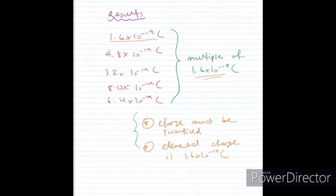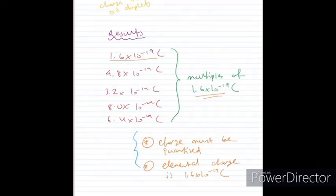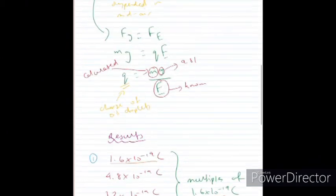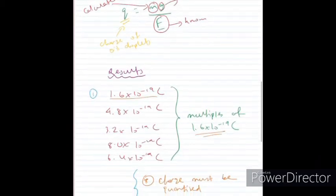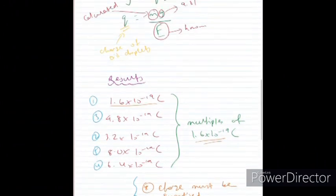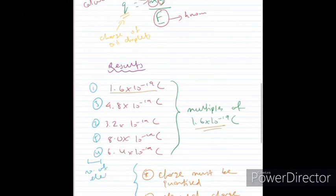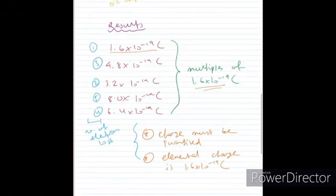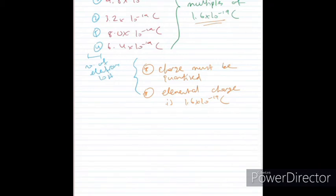And we can use these two conclusions to explain our results over here. In our first case, what must have happened was, 1 electron must have been knocked off the oil droplet over here. In our second case, 3 electrons must have been knocked off the droplet, then 2, 5, 4, and so on. So, this represents the number of electrons lost by the droplets, which is causing this positive charge over here. It's causing this positive charge because electrons are negatively charged, and if we lose a negative charge, then the net charge becomes positive. And as a result of this, he concludes that the charge of an electron must be equal to negative 1.6 times 10 to the power of negative 19 Coulombs.